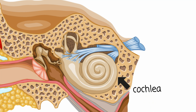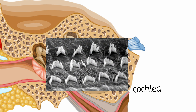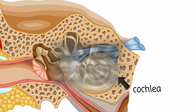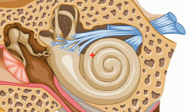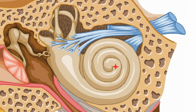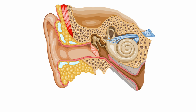The cochlea is the main organ of auditory perception. It contains between 15,000 to 20,000 hair cells that detect vibrations of the liquid and generate nerve impulses that are sent to the brain via the auditory nerve. But this system is fragile and can suffer failures.